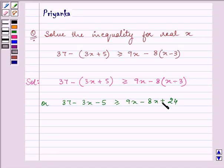Now on simplification, we have 37 minus 5 will give us 32. 32 minus 3x is greater than equal to x plus 24.